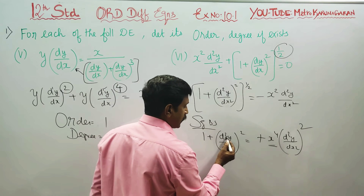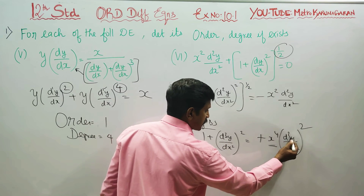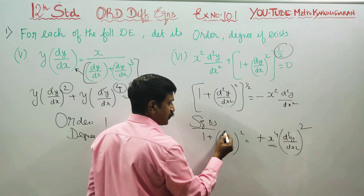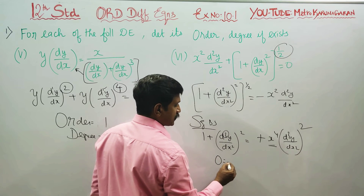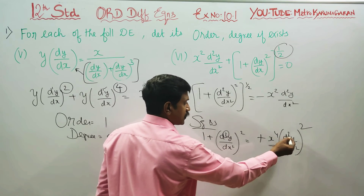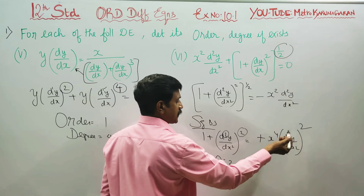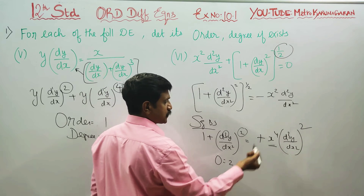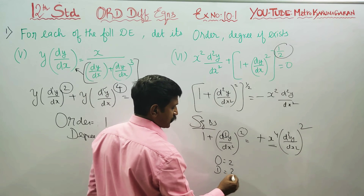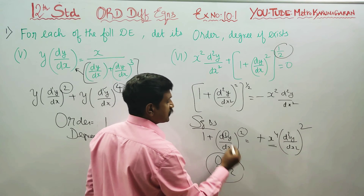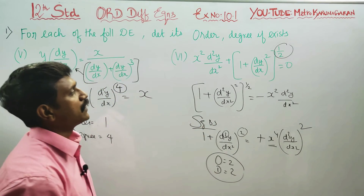The degree — order — this is a second order differential equation. Order is 2. If you choose 2, the degree is 2. Order is 2 and degree is 2.